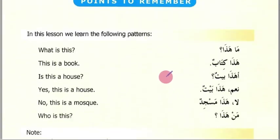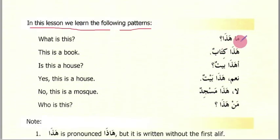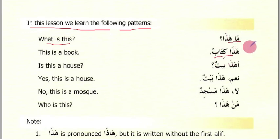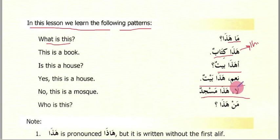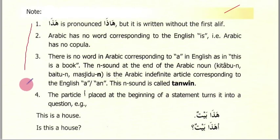Now let's review what we learned in this lesson — points to remember. We learned 'ma hadha' to ask about inanimate objects — 'ma' means 'what', 'hadha' means 'this'. We learned 'ahadha baytun?' — is this a house? With 'na'am' for yes and 'la' for no. We also learned 'man hadha' to ask about people — 'man' means 'who'.